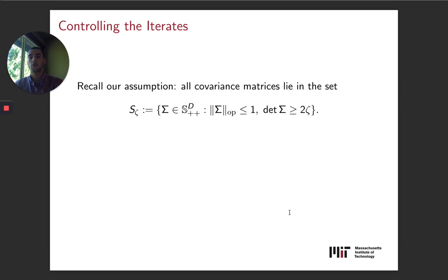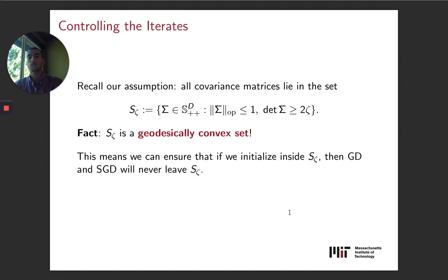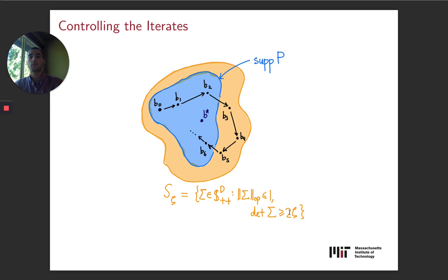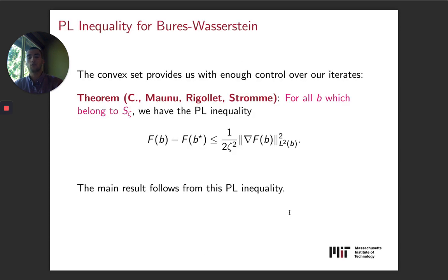The method of proof is to basically control our iterates so that we can ensure a PL inequality throughout the optimization trajectory. This assumption that we made was carefully chosen so that we could ensure that the iterates stay in the set S_zeta. And that is essentially because S_zeta is a geodesically convex set with respect to the Wasserstein distance. The first assumption that the operator norm is no more than one is essentially kind of a normalization assumption. And then the second assumption is really one of the more critical of the two. Because S_zeta is geodesically convex, we know that if we initialize inside S_zeta, then gradient descent and stochastic gradient descent will never leave it. So the picture you can see is right here.